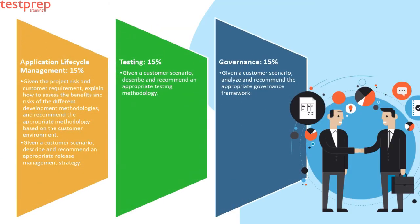Number two: Application Lifecycle Management, 15%. It contains: First, given the project risk and customer requirement, explain how to assess the benefits and risks of the different development methodologies, and recommend the appropriate methodology based on the customer environment. Second, given a customer scenario, describe and recommend an appropriate release management strategy.